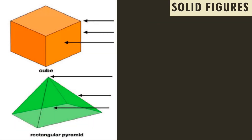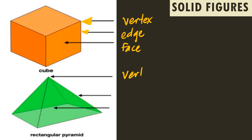Let's try to identify what each arrow is pointing to on the cube. The first arrow is pointing at the vertex. The second arrow is pointing at the edge. The third arrow is pointing at the face of the cube. Same here — one arrow points to the vertex, one to the edge, and one to the face.